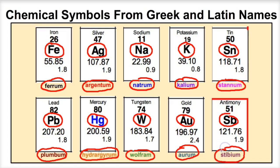So some of these chemical elements have symbols that might look a little unusual, and it's because they're derived from either the Greek or Latin names of those chemical elements. If you like what you see, go ahead and click the subscribe button in the bottom right-hand corner. Feel free to leave any comments or questions below, and I hope you found this helpful. Thank you.